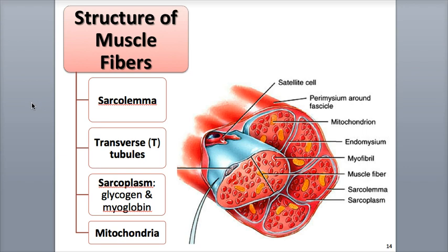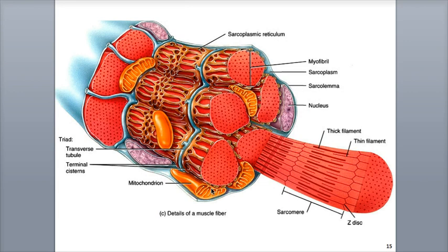The muscle fibers are surrounded by a plasma membrane called the sarcolemma. The prefix sarco means flesh and is often used to describe muscle-related terminology. The sarcolemma is folded inward with thousands of tiny fluid-filled infoldings called transverse or T-tubules, which penetrate the fiber and extend toward the center of the cell. We can see here in blue the outer sarcolemma, and these blue tubes are the transverse or T-tubules extending down into and through the body of the muscle fiber. Think of the word transverse, meaning that the tubules are crossing through the fiber.